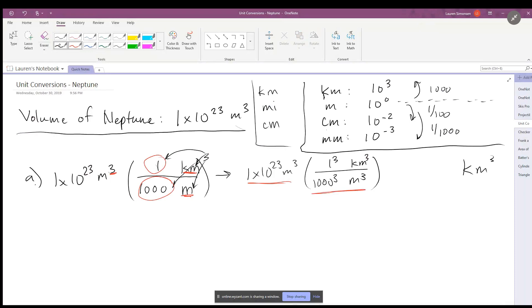So when you do this calculation out, you end up getting 1 times 10 to the 14th kilometers cubed. There is your answer. Now I'm going to do part C before I do part B because it makes more sense to do it this way.